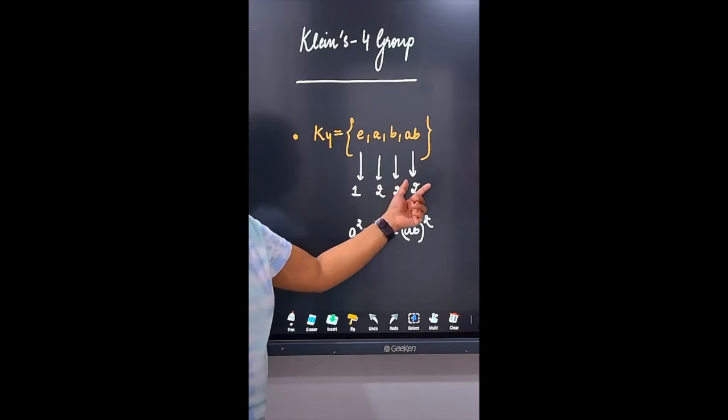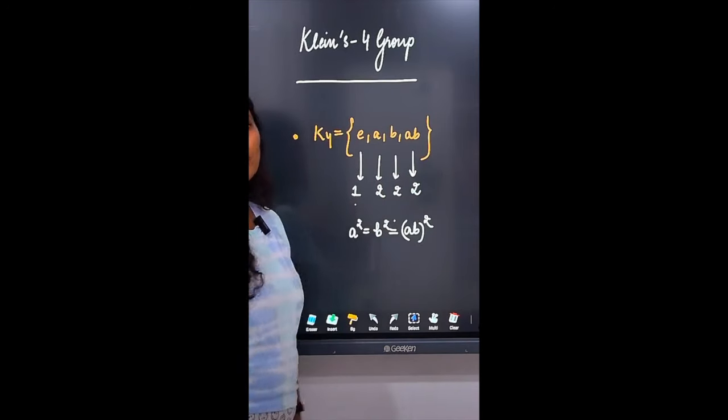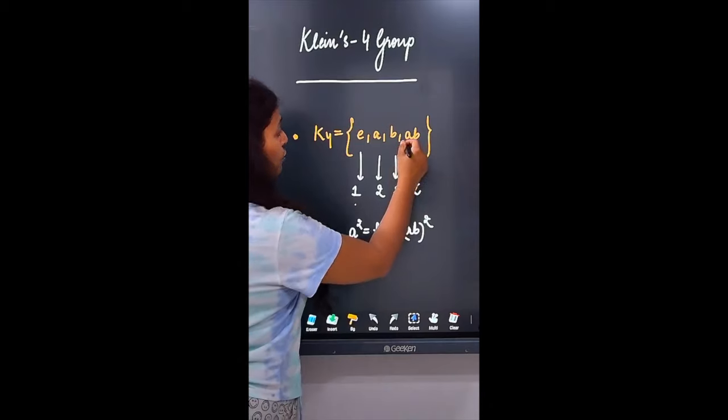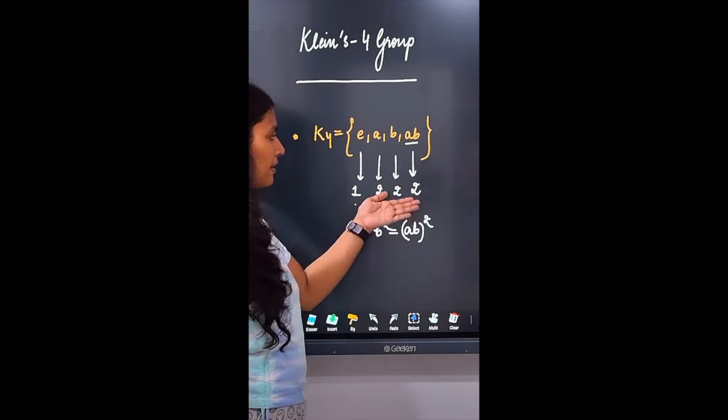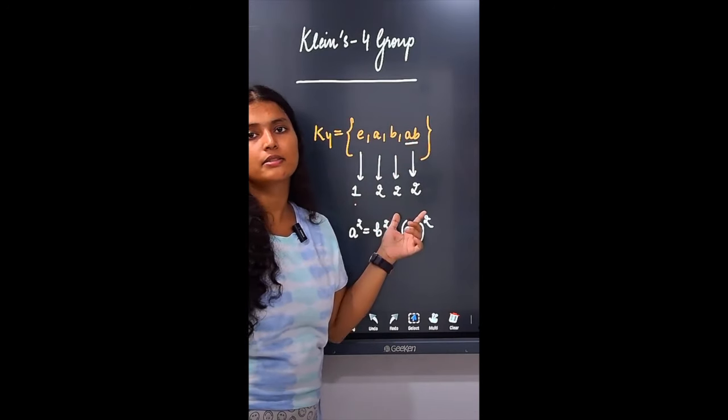There are three order elements and one order identity element. The last element is made from the first three elements. And all of them have to satisfy, if there are two order, we need to make them square.